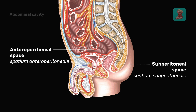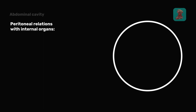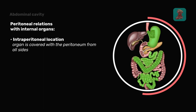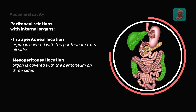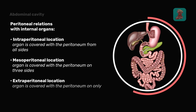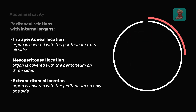The visceral peritoneum may cover the internal organs in three distinct ways. Intraperitoneal location means that the organ is covered with the peritoneum from all sides. Mesoperitoneal location means that the organ is covered with the peritoneum on three sides. Extraperitoneal location means that the organ is covered with the peritoneum on only one side.